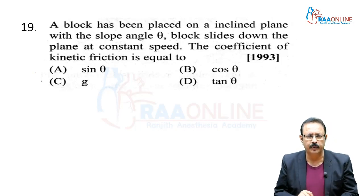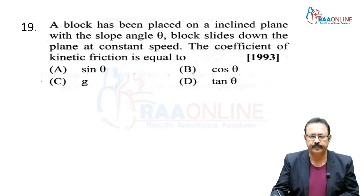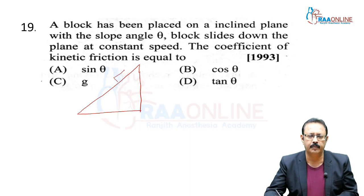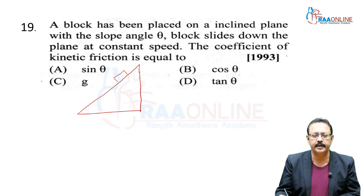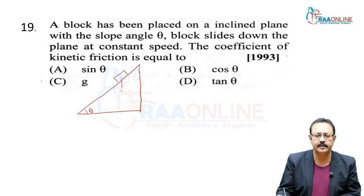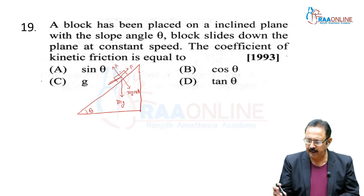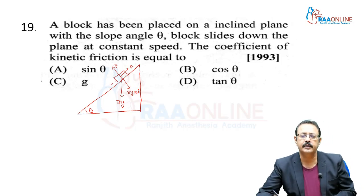The scenario: a block of mass m is placed on an inclined plane of angle θ. Weight acts downward; its components are mg cosθ (balancing normal reaction R) and mg sinθ (along the incline). Since the block tends to slide down, friction acts up the incline.